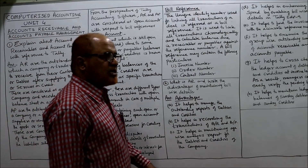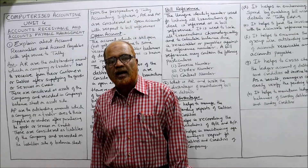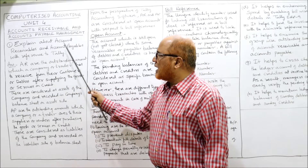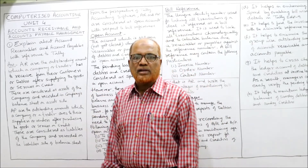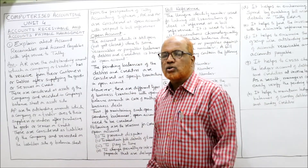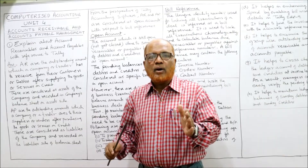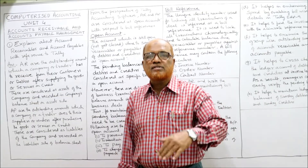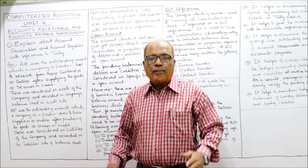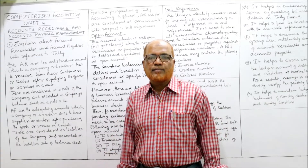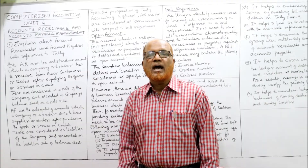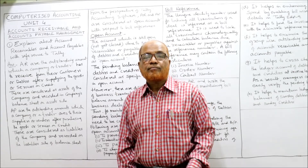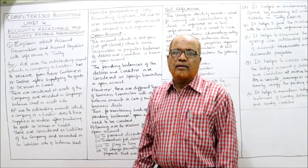This question is frequently asked in examinations: what are accounts receivable and accounts payable as per Tally ERP 9? Account receivable is the amount due from customers for the sale of goods or services provided to them on credit. When goods are sold on credit, the amount due from customers is called account receivable.